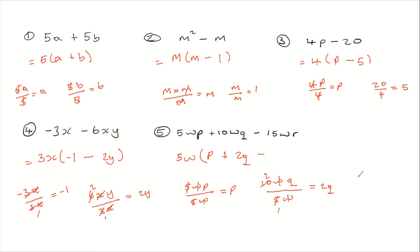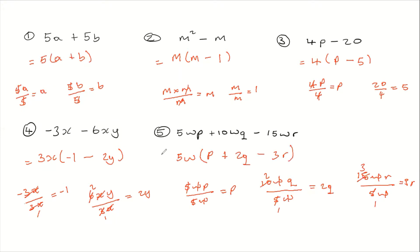Then we would have 15wr all divided by 5w. W will cancel out w; 5 into 15 gives us 3, and 3 times r gives us 3r. So write 3r here and close our bracket. That's how you would factorize number 5 — the answer is 5w(p plus 2q minus 3r).